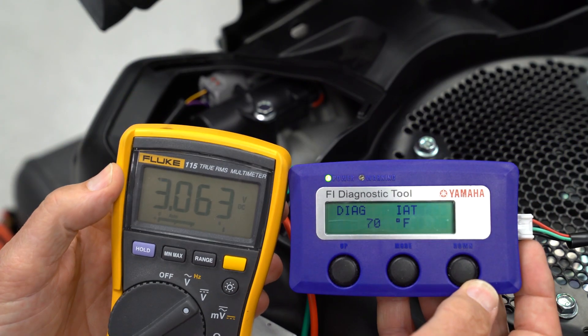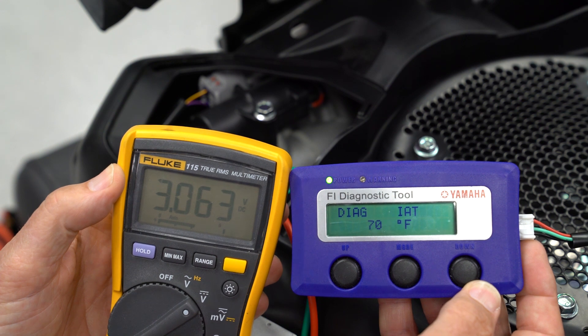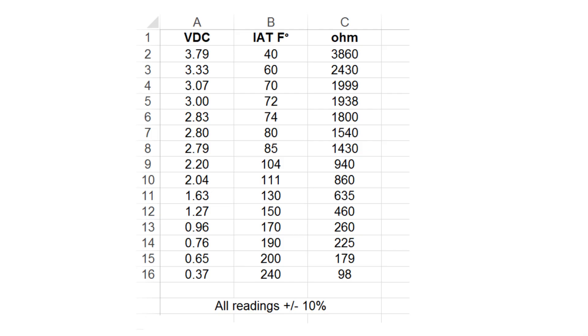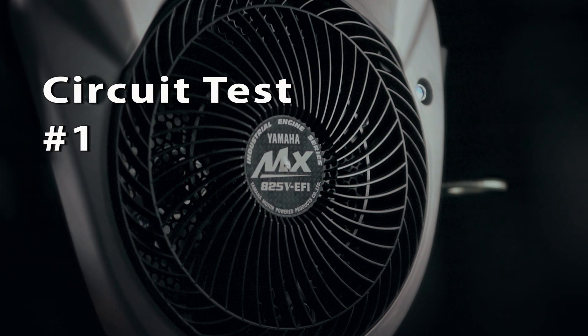Connect the FI Diag tool, turn the main switch on, and set the Diag tool to Diag IAT. Note the temperature and voltage readings. This chart will give you an idea of the readings you should get. Higher temperatures will equal a lower voltage reading; lower temperatures, a higher voltage. If the temperature and voltage readings match this chart within the tolerance percentage, the sensor and circuit should be good. If the readings vary a great deal, use the following steps to verify the sensor circuit.